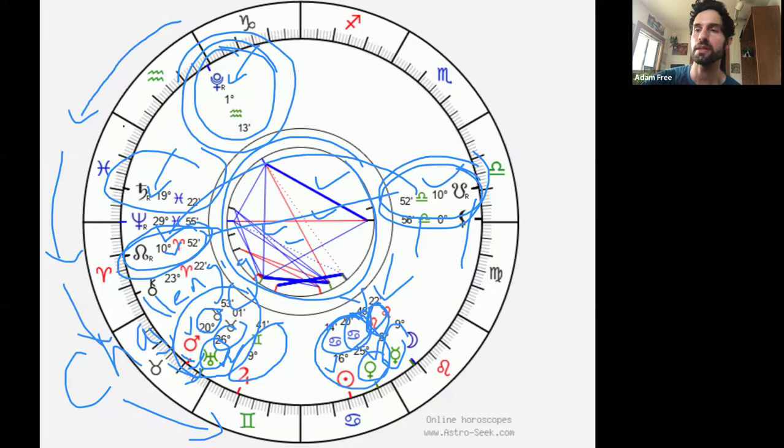Sextiles, which is basically a trine cut in half, is really the ability for creative opportunities and the ability to be able to open our eyes to a new way of being and a new way of looking at things. So those are also very exciting as well. The red lines, those are squares and oppositions.